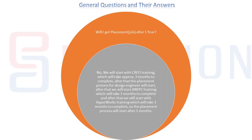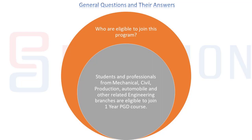Will I get the job after one year? No — we will start with Creo training which takes 3 months, after which the placement process for design engineer will start. Then Ansys training takes 3 months, followed by HyperWorks training for 3 months. So the placement process will start after three months.